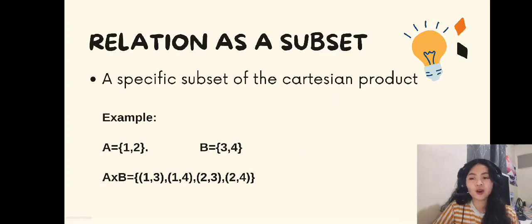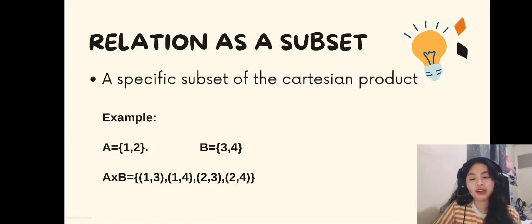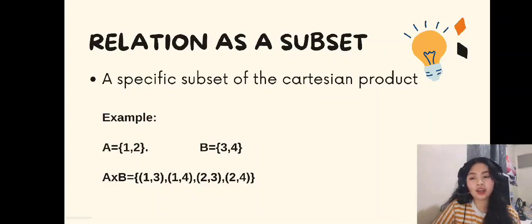It is also a specific subset of the Cartesian product. For example, set A equals {1, 2} and set B equals {3, 4}. If we combine them together, A×B equals {(1,3), (1,4), (2,3), (2,4)}. So what we do here is distribute the numbers in set A to set B.